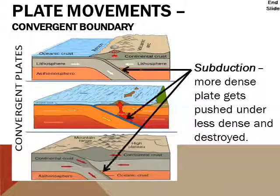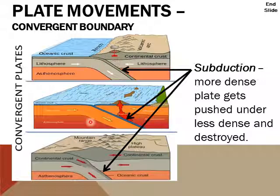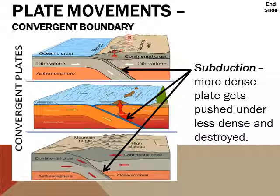The next type of boundary is a convergent boundary — where you get plates that move toward each other. Regardless of what type of plates there are, you always get the more dense plate pushed underneath the other plate. This process is called subduction. When one plate gets pushed under, it gets destroyed and recycled back into the Earth. You can have oceanic crust along with continental crust — a great example is on the west coast of North America, where the Rocky Mountains are being caused by the Pacific plate going underneath the North American plate and pushing up. You also get volcanoes like Mount St. Helens in that mountain range because of that subduction of the oceanic plate pushing up on the continental plate.